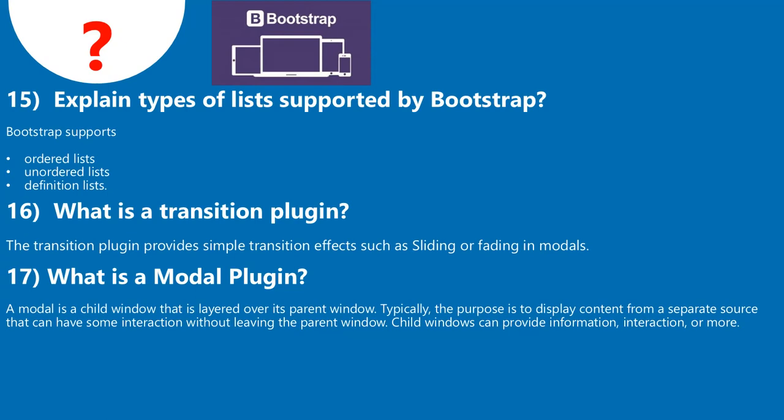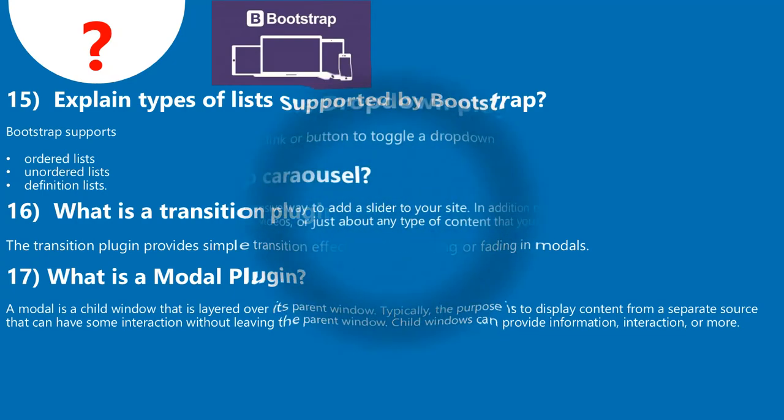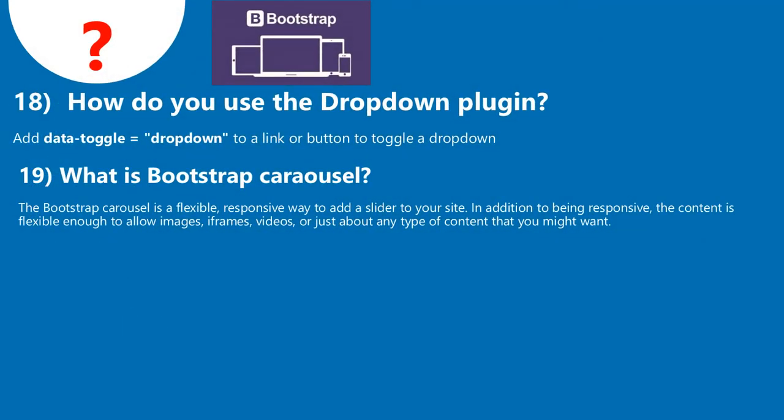Child windows can provide information, interaction, or more. Question 18: How do you use the dropdown plugin? Add data-toggle equals 'dropdown' to a link or button to toggle a dropdown. Question 19: What is Bootstrap carousel? The Bootstrap carousel is a flexible, responsive way to add a slider to your site. In addition to being responsive, the content is flexible enough to allow images, iframes, videos, or just about any type of content.